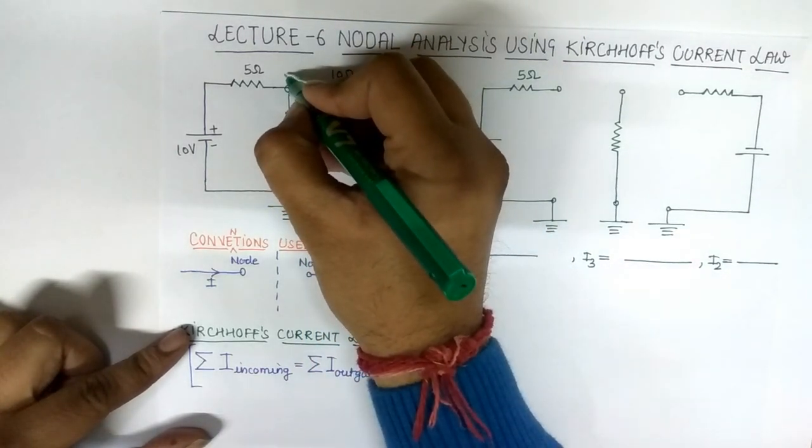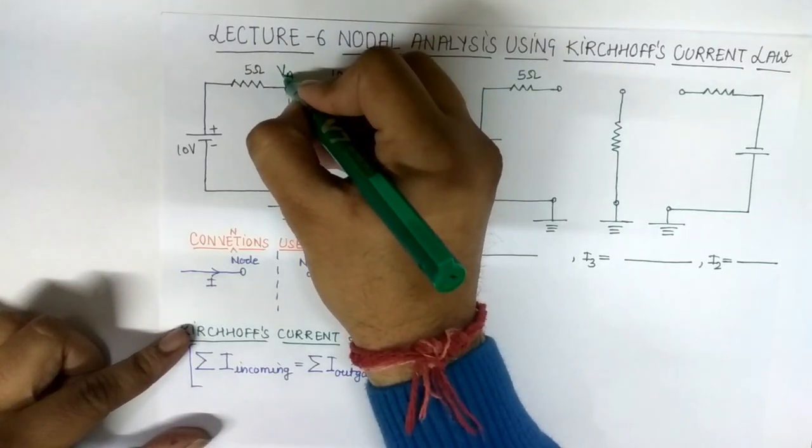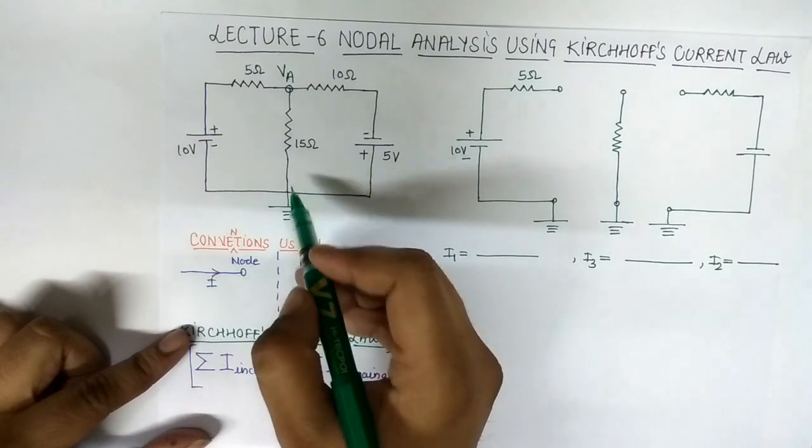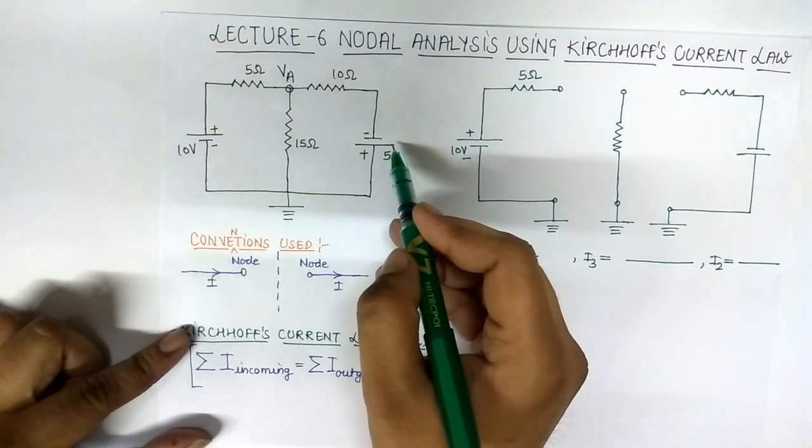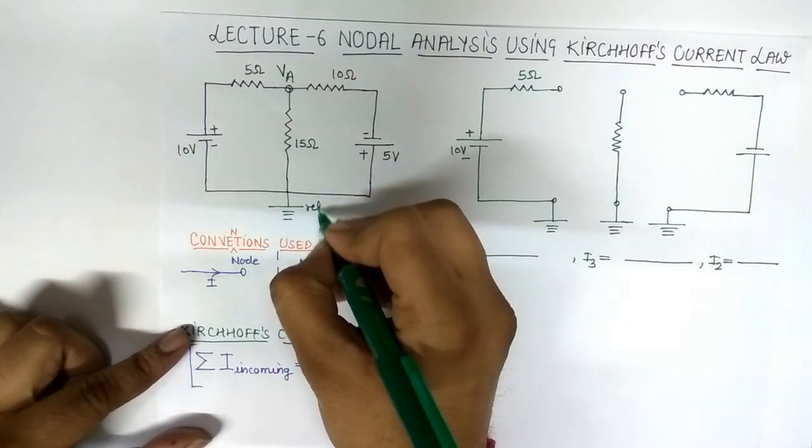And again here there are more than two circuit elements connected: 10 volt, 15 ohm resistance, and 5 volt at this junction. So this is, let us say, the reference node. Here we assume 0 volt at ground potential.